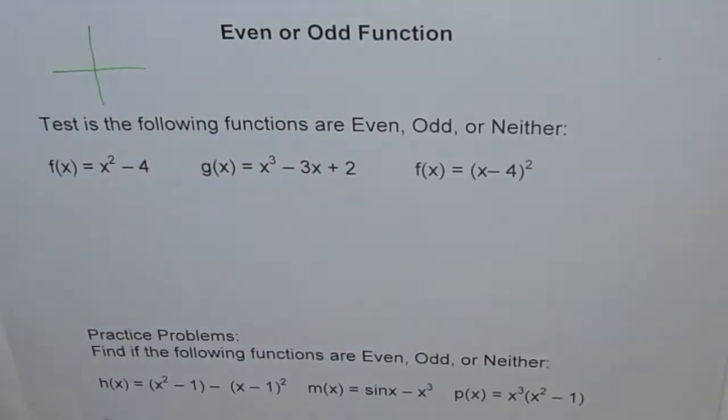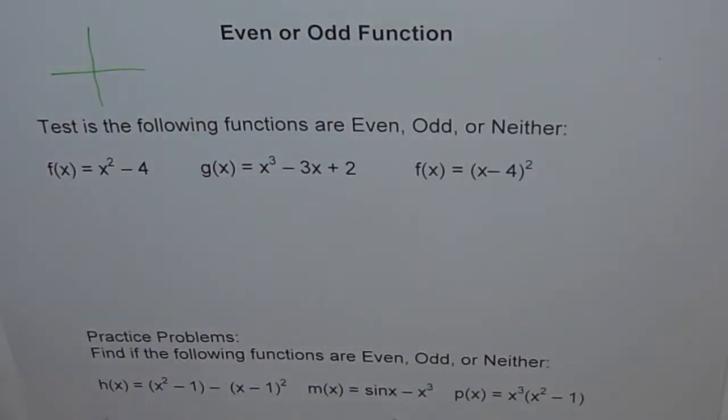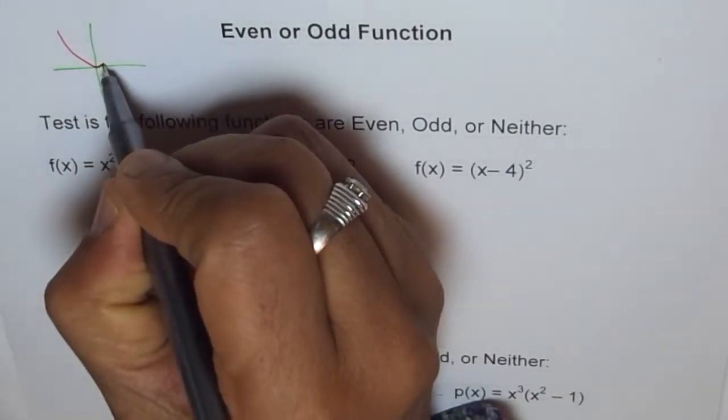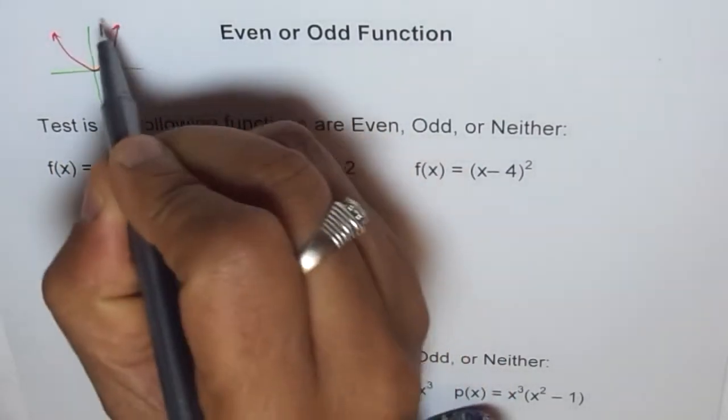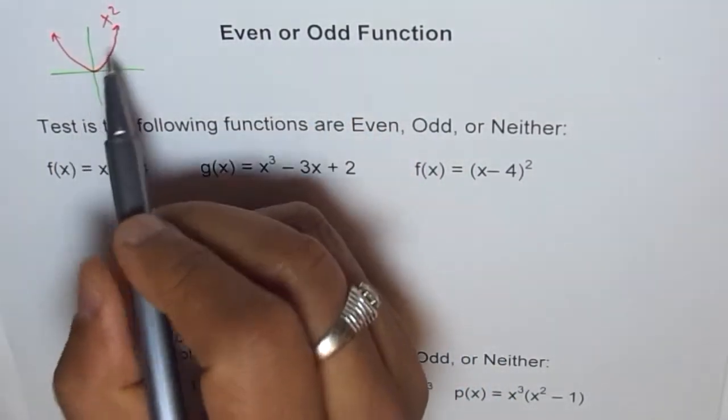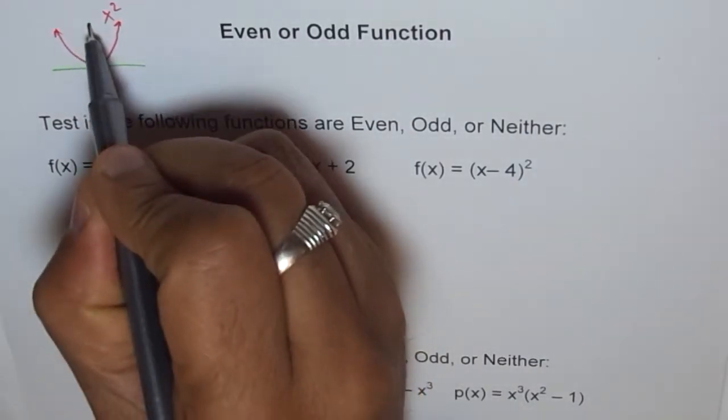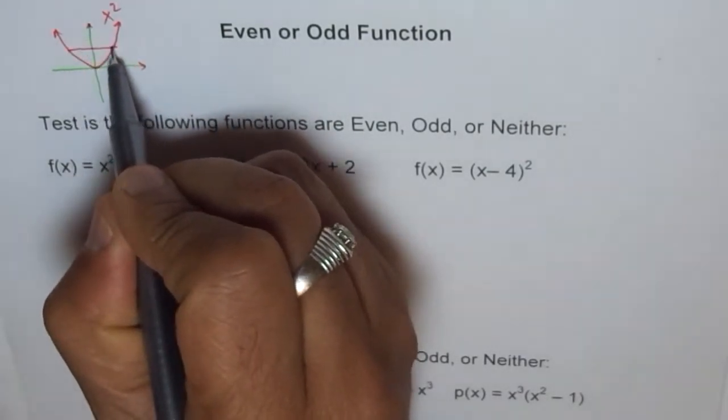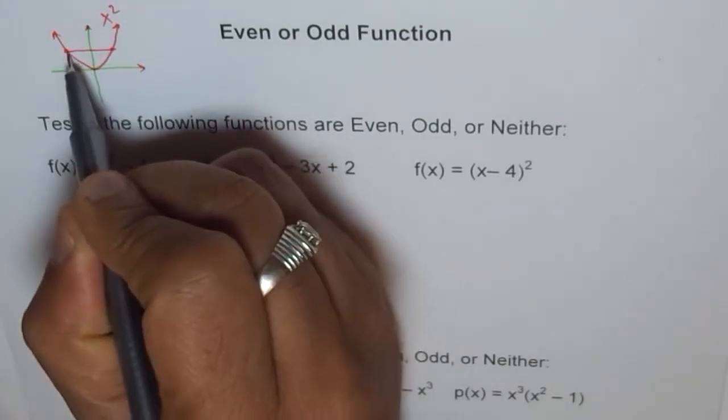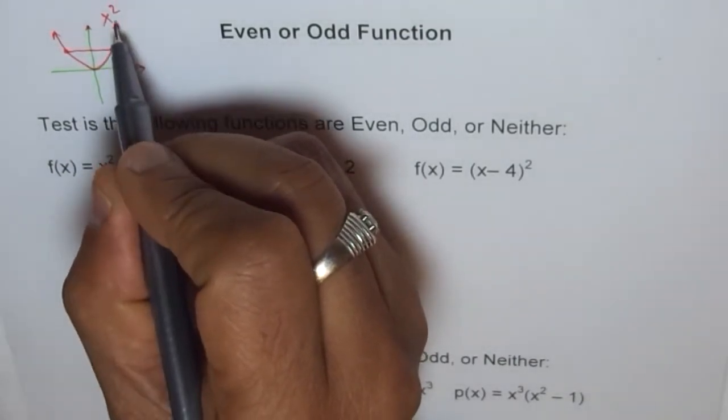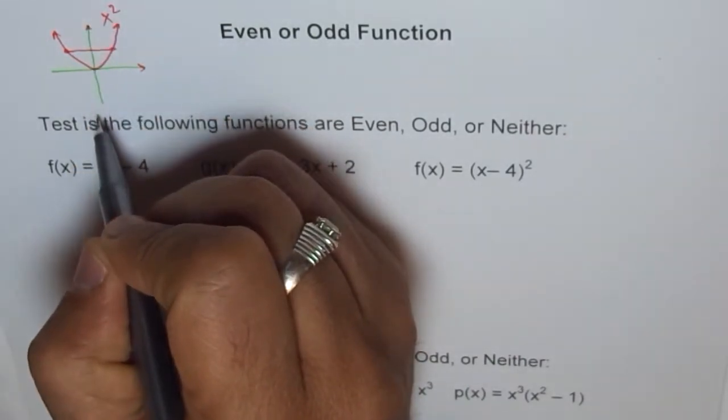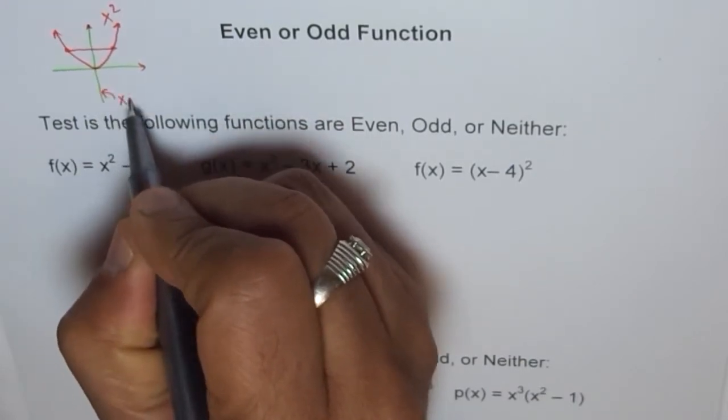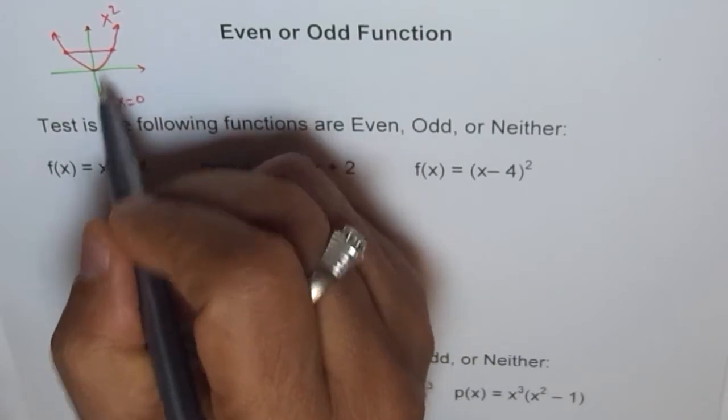Let's say we have a graph like this. Let's take an example of a parabola. Parabola is an even function, the basic parent function. So I'll show you what I mean by even function. Let's say this is my parabola, y equals to x squared. Now here what we see is, this line, y-axis, acts like a mirror for this function. And we have a point here whose mirror image is on the other side of it. So if a curve is symmetric about y-axis, we say it has a line of symmetry, and that line of symmetry is y-axis, which means x equals to 0. And that function is even function.